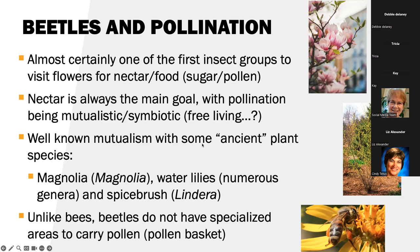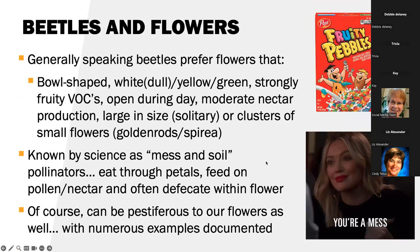Beetles have a well-known mutualism with some of the ancient plant species — magnolia, for example, water lilies, and then spice bush. Unlike bees, beetles do not have specialized areas to carry pollen — that would be the pollen basket on the hind leg. I have not seen a beetle with a pollen basket, and I don't think it will ever evolve. But we just need to know they're not going to be as efficient as bees for pollination, but they're going to play a critical role.